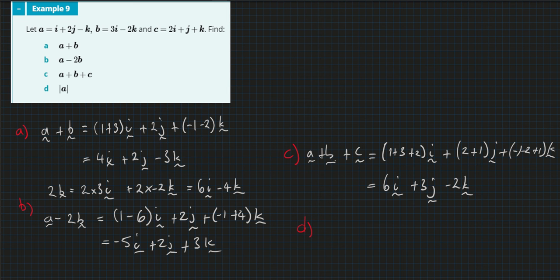Which equals altogether 6i, 3j minus 2k. And part D, the magnitude of A is just equal to the square root of 1 squared plus 2 squared plus minus 1 squared equals square root of 6.